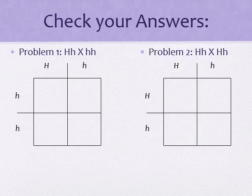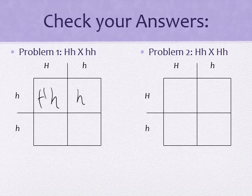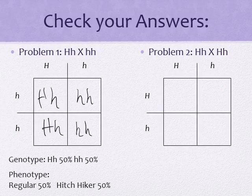Welcome back. Let's go ahead and see how we did. So in the first problem, we were crossing a heterozygous normal thumb with a hitchhiker's thumb. Combining our alleles in the Punnett square: first box capital H lowercase h, second box lowercase h lowercase h, third capital H lowercase h, and fourth lowercase h lowercase h. So our genotype will be 50 percent heterozygous (capital H lowercase h) and 50 percent homozygous recessive (lowercase h lowercase h). The phenotype would be 50 percent regular thumb and 50 percent hitchhiker's thumb, because hitchhiker's thumb can only appear if you have both lowercase letters.